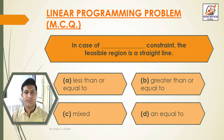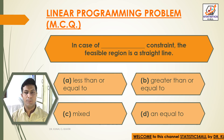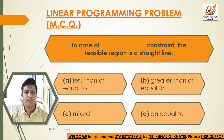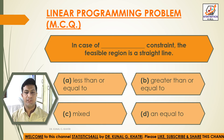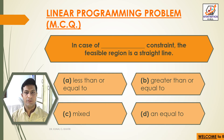Question 14: In case of dash constraints, the feasible region is a straight line. Option A: Less than or equal to. Option B: Greater than or equal to. Option C: Mixed. Option D: Equal to. Answer: Option D — In case of an equal to constraint, the feasible region is a straight line.